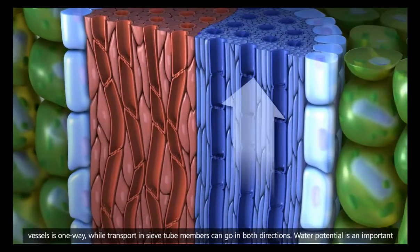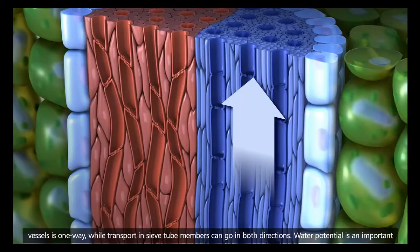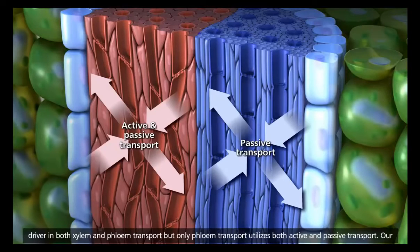Water movement in vessels is one way, while transport in sieve tube members can go in both directions. Water potential is an important driver in both xylem and phloem transport, but only phloem transport utilizes both active and passive transport.